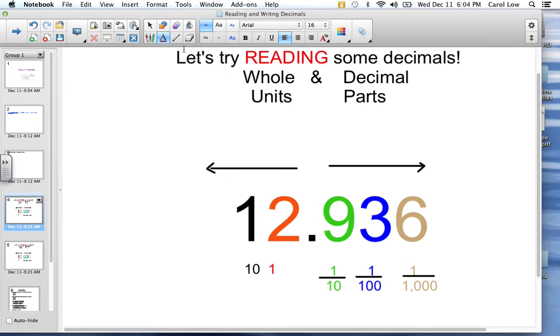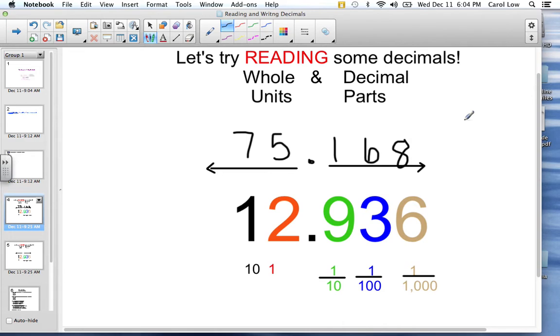So I'm going to write a couple of decimals, and I'm going to have you read them out loud. And then I'm going to read them out loud and see how you have done. Here's the number. You read it out loud. And now I'm going to read it out loud. It's seventy-five and one hundred sixty-eight thousandths. How did you do?